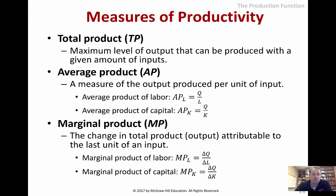Measures of productivity: total product is essentially the production function. We can look at the average product, which is the total Q divided by some level of input — labor or capital. Marginal product — remember, marginal always means extra — is the change in output for some level of change in one of the inputs.